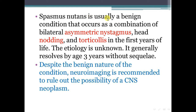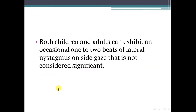Spasmus nutans is usually a benign condition that occurs as a combination of bilateral asymmetric nystagmus, head nodding, and torticollis in the first year of life. The etiology is unknown and it generally resolves by the age of three years without sequelae. Despite the benign nature of the condition, neuroimaging is recommended to rule out the possibility of CNS neoplasm. Both children and adults can exhibit occasional one to two beats of lateral nystagmus on side gaze that is not considered significant.